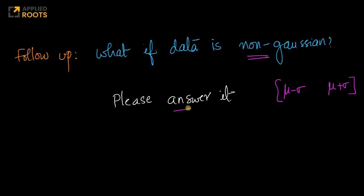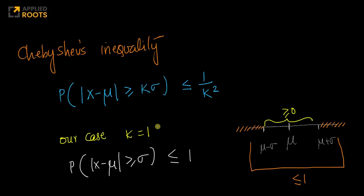Please pause this video and try to answer this question on your own. In a lot of product-based companies and good interviews, you see a nice sequence of follow-up questions to understand your thought process. If you have tried to tackle it, one simple way is to use something called Chebyshev's inequality — a very popular inequality in basic probability theory.